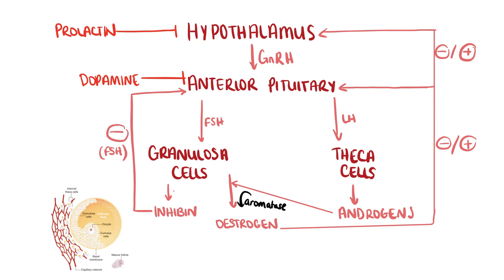Follicle-stimulating hormone, or FSH, stimulates the growth of a follicle, and follicles release hormones. Follicular granulosa cells secrete both inhibin and oestrogen. As the follicle grows bigger, it produces more and more oestrogen, which has a negative feedback effect on the HPG axis, and lowers the amounts of FSH and LH released. This reducing level of FSH and LH means there is only enough hormones to allow one follicle to survive.